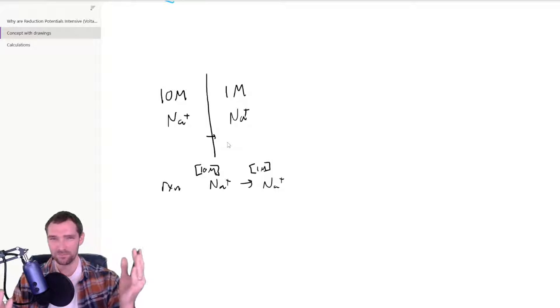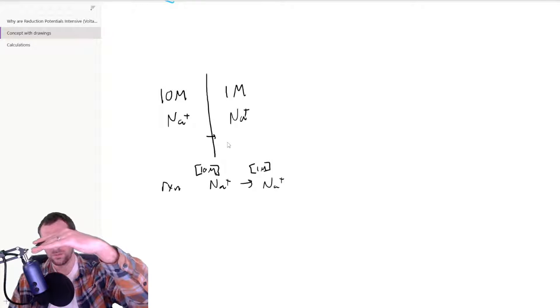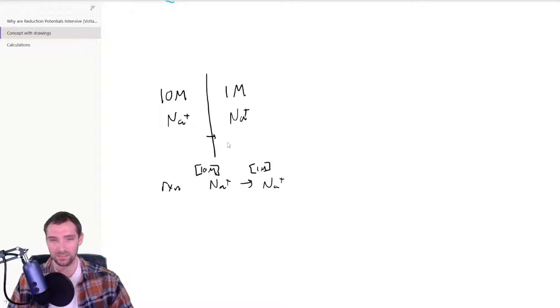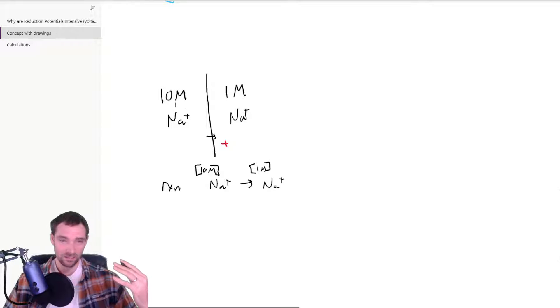So it's like it wants to flow down its concentration one way, but it's getting pushed back by the positive charge that's already there, right? Because this will end up becoming like a more positive charge than that side. And so you end up having that charge correspond to the concentration.